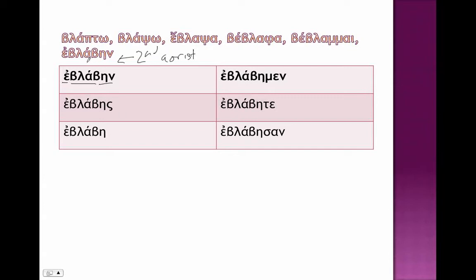So take a look — remember that the sixth principal part is very useful: it's going to form our aorist passive once you add these particular endings onto it.